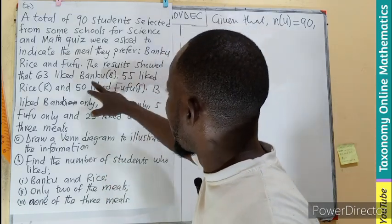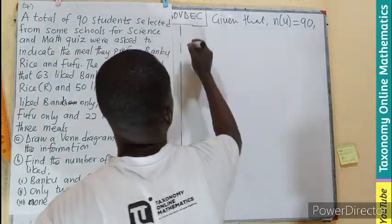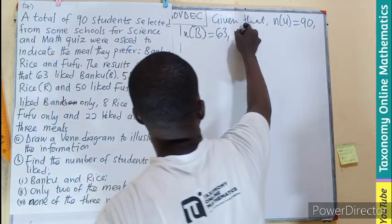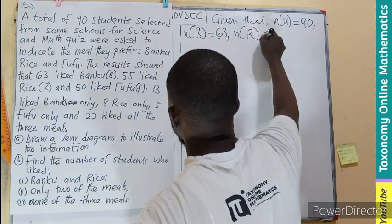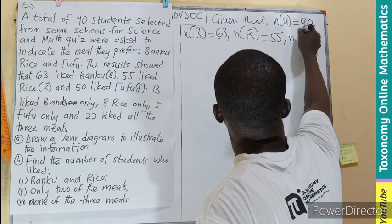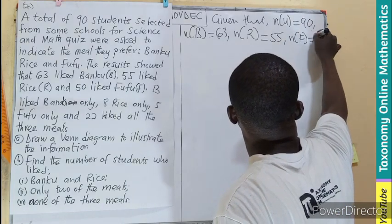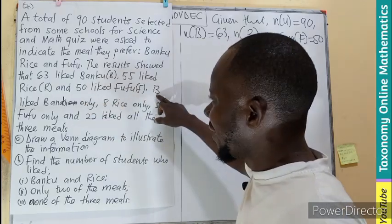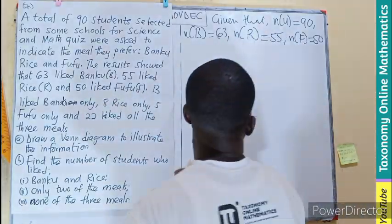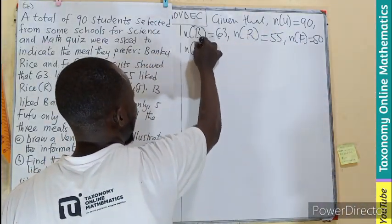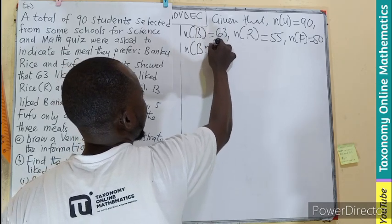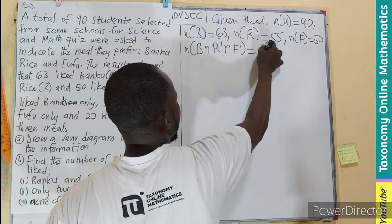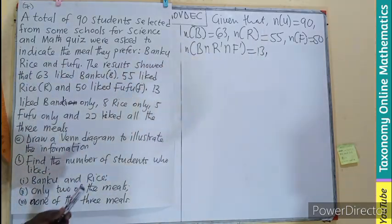The number of B (Bangku) is 63. Number of R (Rice) is 55. Number of Fufu is 50. And 13 like Bangku only, meaning the number of Bangku intersection Rice-complement intersection Fufu-complement is 13.